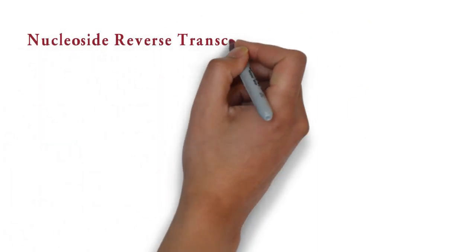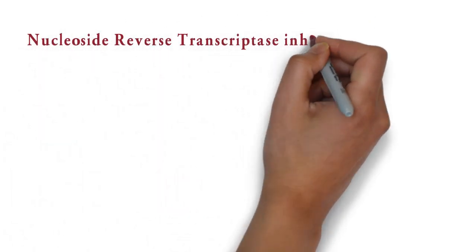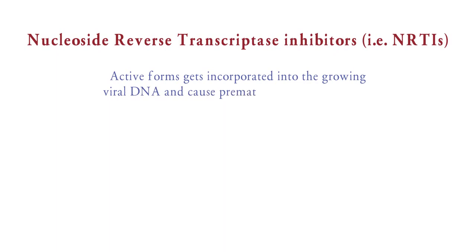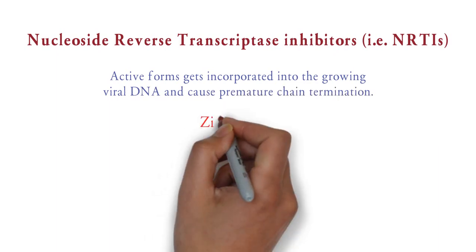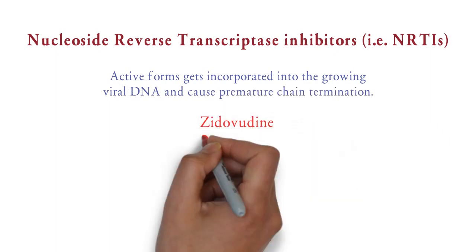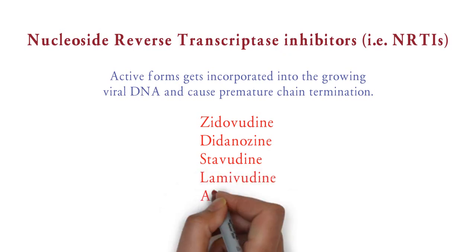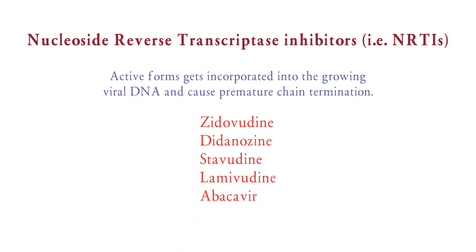First are nucleoside reverse transcriptase inhibitors, i.e. NRTIs. The mechanism: active forms of nucleosides get incorporated into the growing viral DNA and cause premature chain termination. Examples are zidovudine, didanosine, stavudine, lamivudine, and abacavir. These are very commonly used names, so I don't want to burden your brain by providing a mnemonic for this.